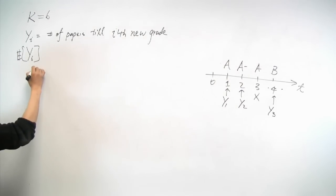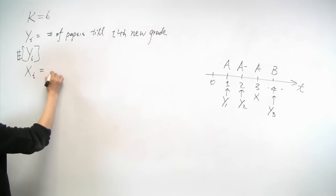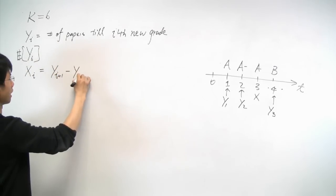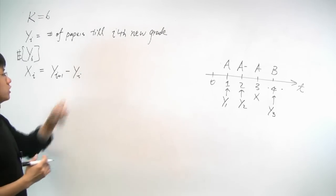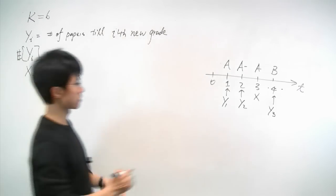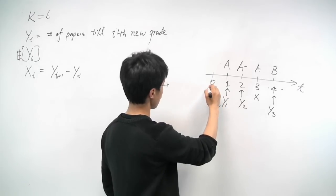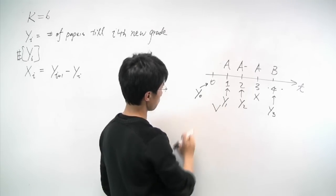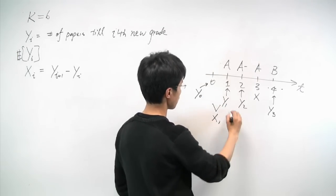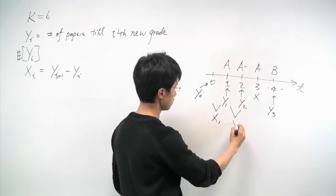It turns out it's much easier to look at the following variable derived from the yi's. We'll define xi as the difference between yi+1 minus yi. And in words, it says xi is the number of papers you need until you see the (i+1)'s new grade after you have received i new grades so far. So in this case, x1 will be the difference between y1 and y0, which is always 1.